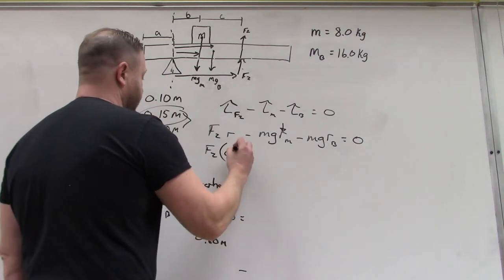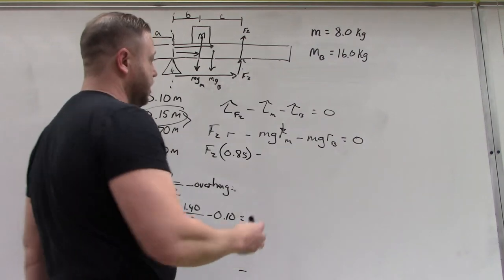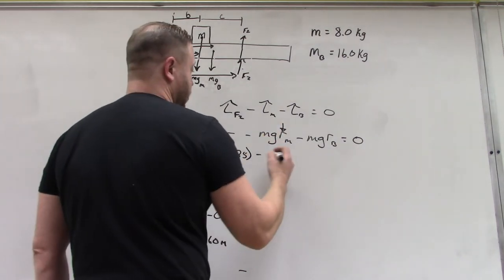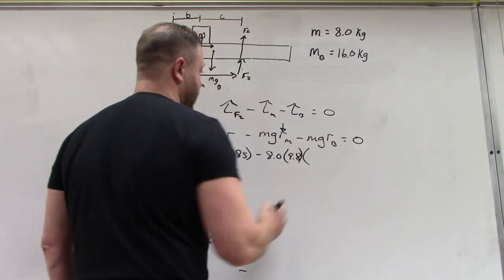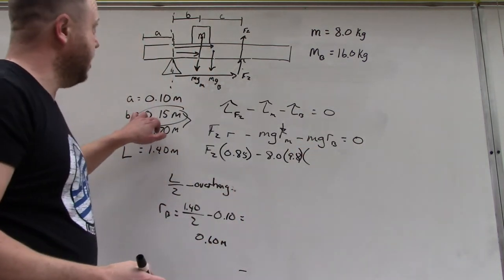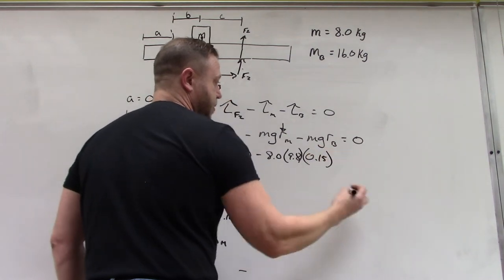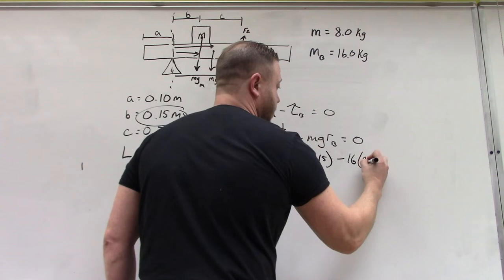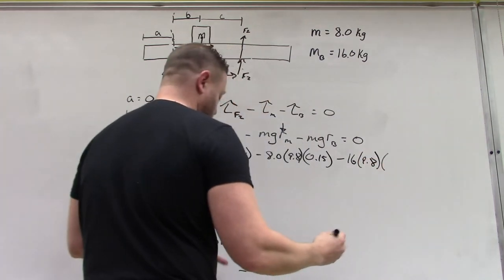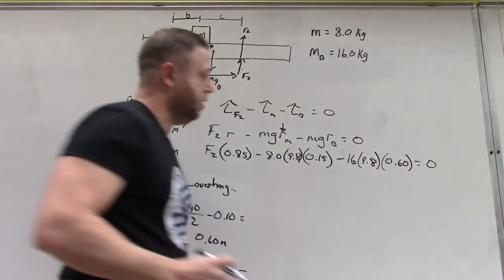Now it's time to plug in the numbers. Force two times the radius, which is 0.85, minus mgr of the mass. So we've got 8 times 9.8 times the radius, which is 0.15.